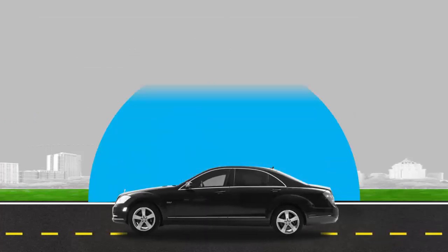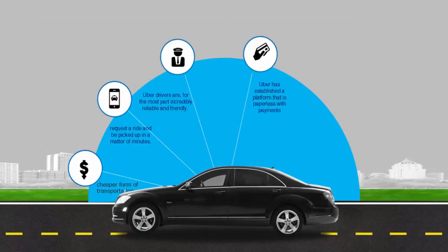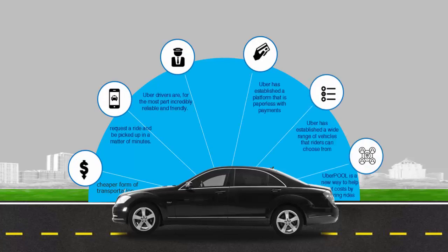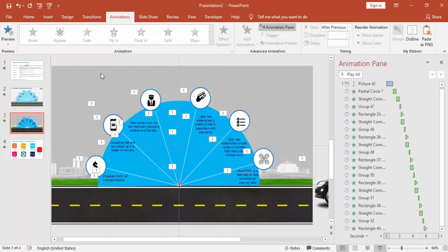Now I've added all the animations. When I click, the car comes in, then the semicircle appears, and then each point starts to come onto the screen. If you want, you can add a good headline or title, and add more icons as needed. That's it from me, friends — I hope you like this tutorial. Don't forget to subscribe to my channel PowerPoint University. Thank you very much and see you soon with more interesting content. Goodbye!